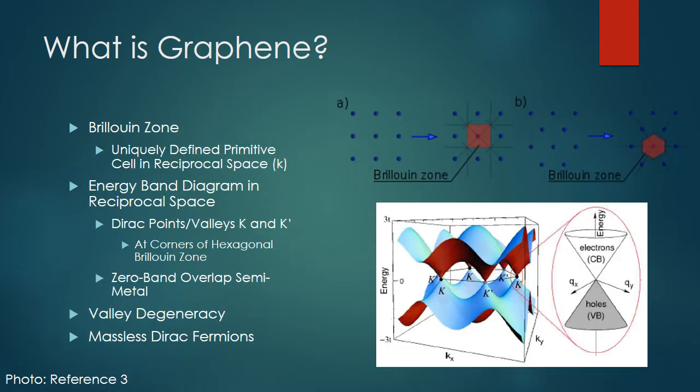Before we talk about the band structure of graphene, it's first important to introduce the idea of a Brillouin zone. A Brillouin zone is a uniquely defined primitive cell in reciprocal space, represented by the wave number K. It is the reciprocal space analog to the Wigner-Seitz cell in real space. So with that in mind, taking a look at the bottom right diagram, we can see a depiction of the energy band diagram of graphene in reciprocal space of one Brillouin zone. We can see that the valence band and conduction band touch at the Dirac points commonly referred to as K and K', which lie at the corners of the hexagonal Brillouin zone. From this, we can also see how there is a two-fold valley degeneracy around the points K and K'. This degeneracy creates problems and will be addressed in more detail later on.